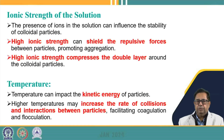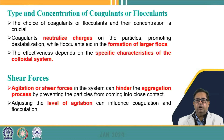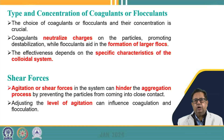Temperature also affects coagulation because it impacts the kinetic energy of particles, increasing the rate of collisions and interactions between particles, facilitating the flocculation process. The concentration of coagulant and flocculant also decides efficiency — coagulants are used so that particles can come closer and form larger flocs and settle down. It is very important to decide the correct dose of coagulant or flocculant needed for efficient coagulation and flocculation.